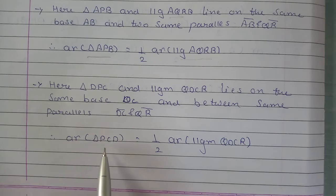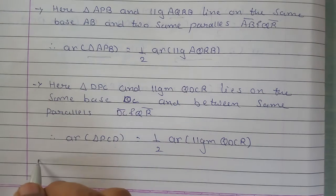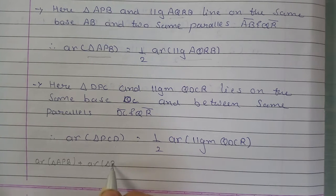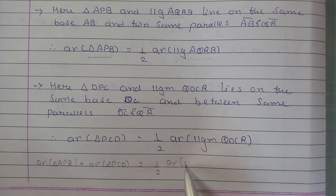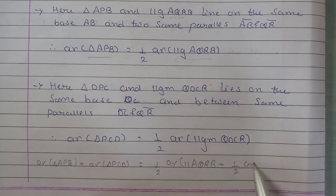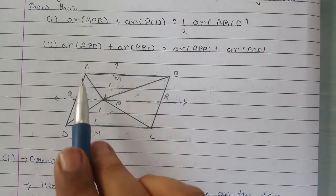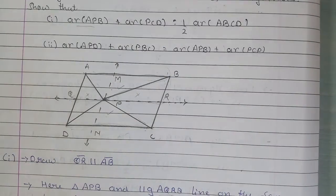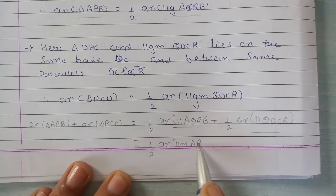So, that's what we have written — triangle PCD ka area parallelogram QDCR ke area se half hoga. Ab dono ko plus kar do: area of triangle APB plus area of triangle PCD will be equal to half the area of parallelogram AQRB plus half area of parallelogram QDCR. Ab AQRB aur QDCR — ye dono parallelograms ko mila do to bada ABCD ban jayega. That means hum in dono ki jagah pe likh sakte hain: half of area of parallelogram ABCD.